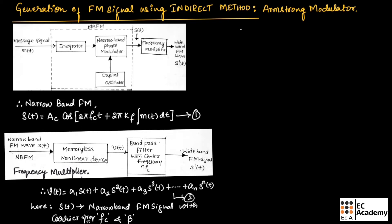The instantaneous frequency of narrow band FM, we can write it as fi(t) = fc + kf m(t).